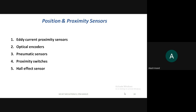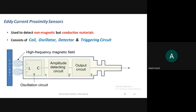Moving on to the first type — the eddy current proximity sensor. Proximity is just the presence of a nearby object. The eddy current sensor is used to detect non-magnetic but conductive materials. It is used for detecting just the presence of conducting material — not displacement, pressure, or temperature.